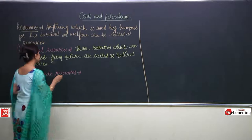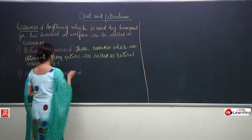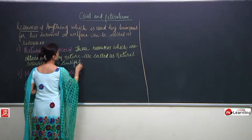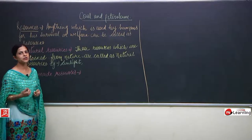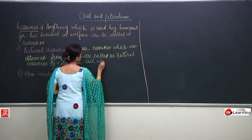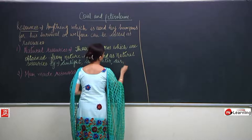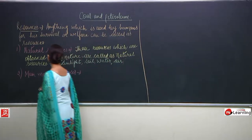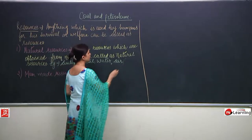What are examples of natural resources? Just try to recall what are the things which we get naturally. It can be sunlight, soil, water, and air. All these are natural resources.